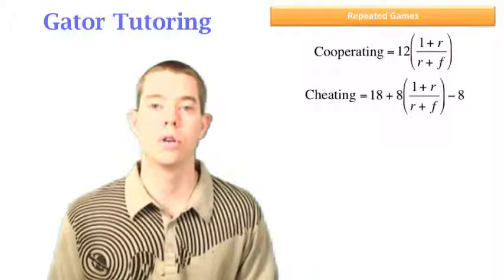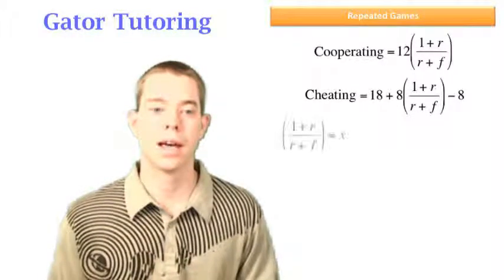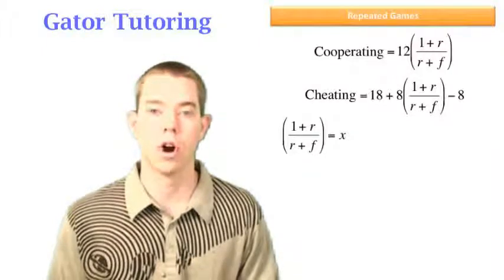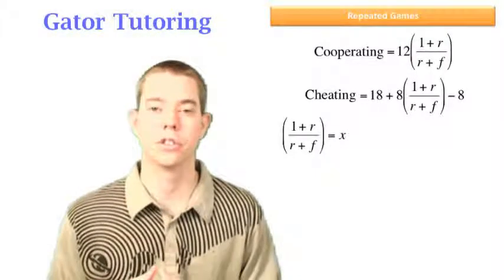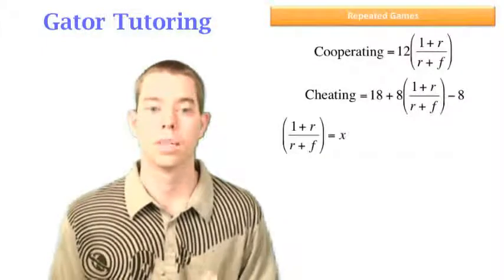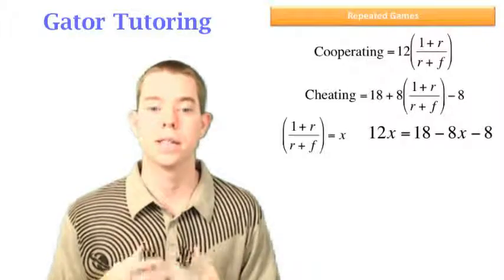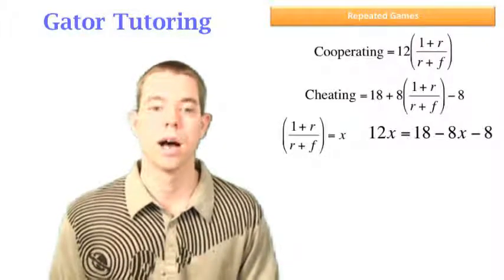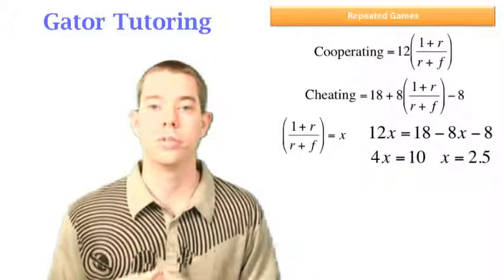Well, now that we have both of those, I'm going to do a little trick just to make the algebra easier. I'm going to say that let's define (1+r)/(r+f) as x. This is just, you don't have to do this, this is just to make the algebra easier. And I'm going to set cooperating equal to cheating. So 12x is equal to 18 + 8x - 8. I can clean this up and combine like terms and solve for x to be 2.5.